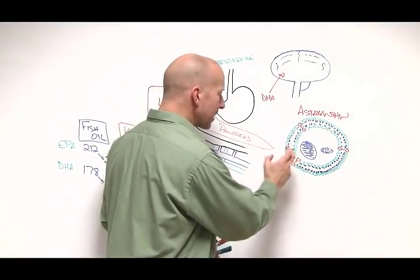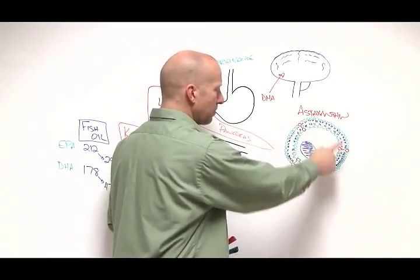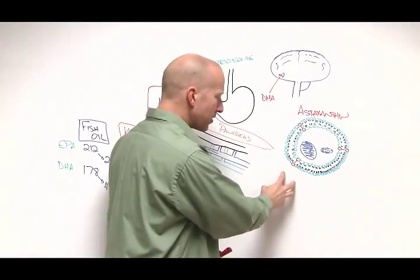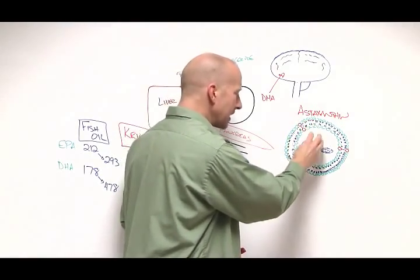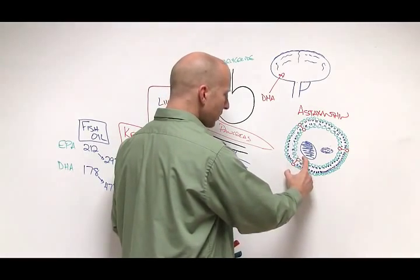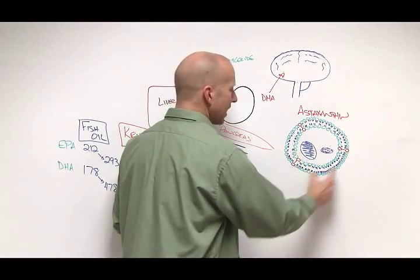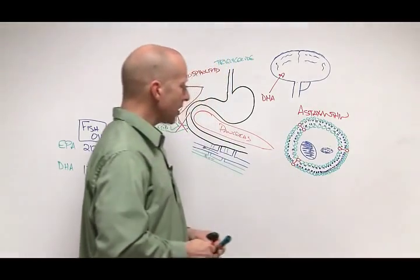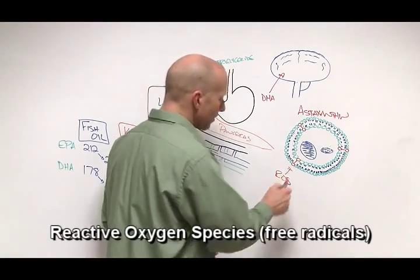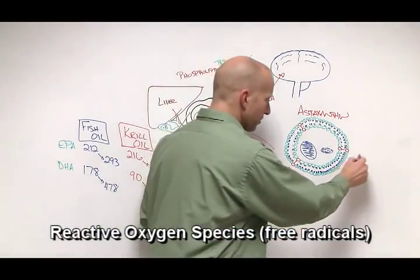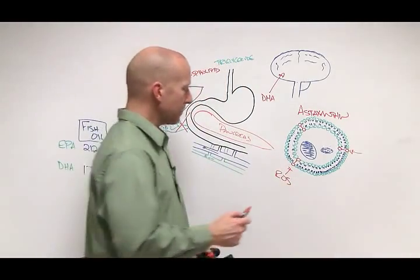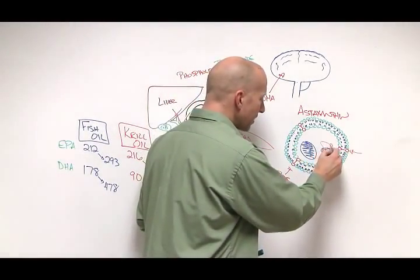Astaxanthin can actually embed itself into what's called the phospholipid bilayer membrane of all the cells of our body. Most antioxidants will either exist outside the cell or maybe get inside the cell, but astaxanthin, because of the way that it's molecularly shaped, can fit inside the cell membrane. This means that we are now protecting this cell from reactive oxygen species or free radicals from the outside, of which there are many in our world today, as well as anything that our body is normally producing.